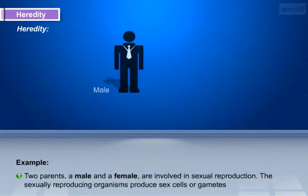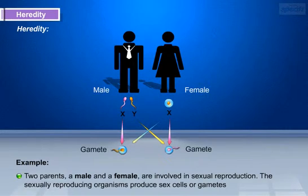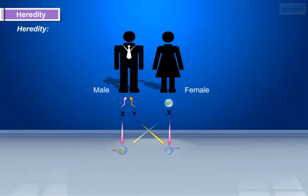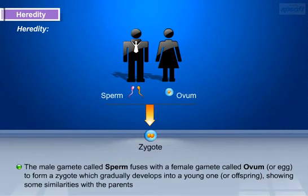For example, two parents — a male and a female — are involved in sexual reproduction. The sexually reproducing organisms produce sex cells or gametes. The male gamete called sperm fuses with a female gamete called the egg cell to form a zygote, which gradually develops into a young one showing some similarities with the parents.